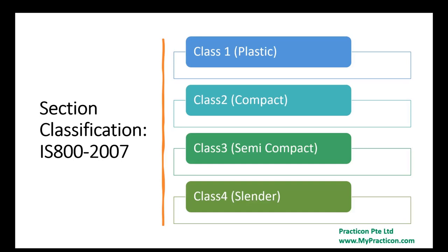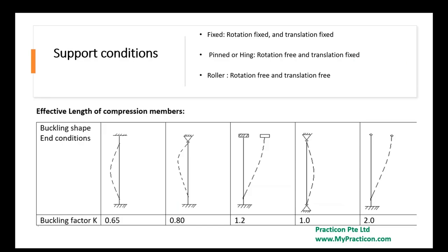Based on these categories we can estimate the relevant section properties to calculate the section properties. However, the same compression members also depend on supporting conditions. Based on the supporting conditions the buckling factor will be given by most of the codes, can be multiplied by the length of the member so that your buckling length will be estimated.